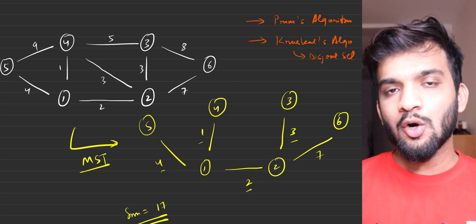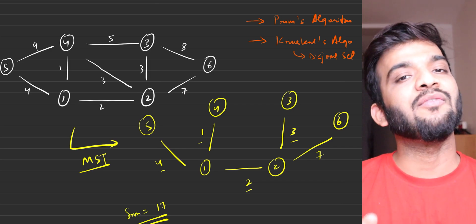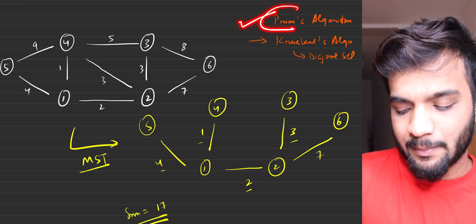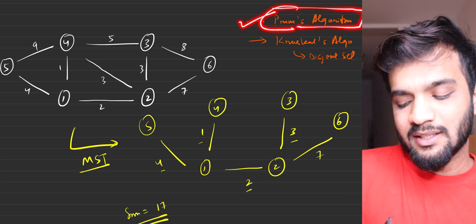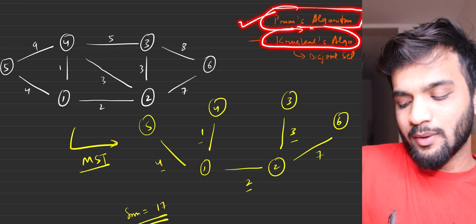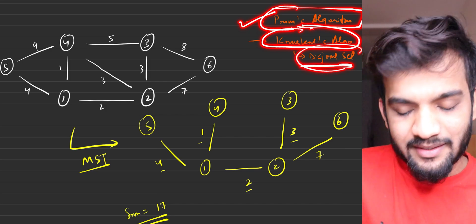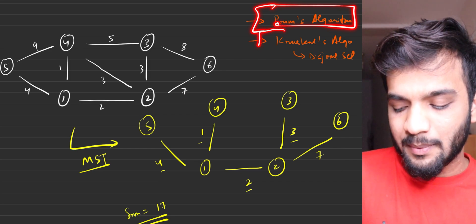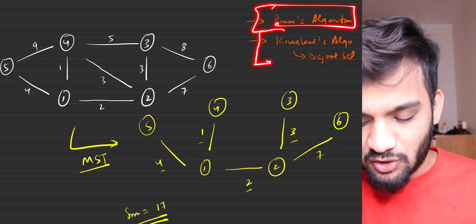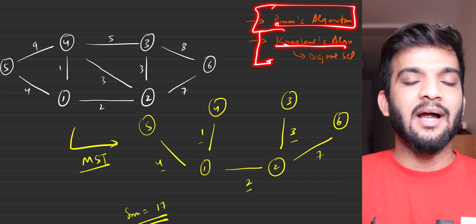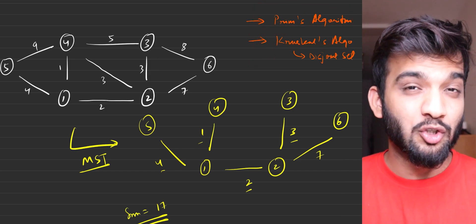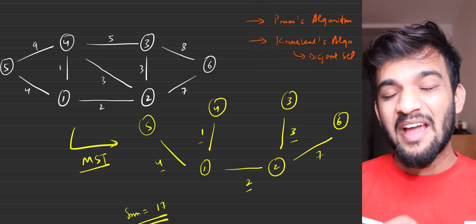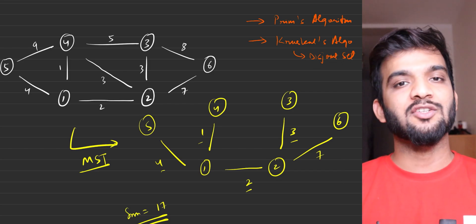Now you may wonder how to actually find the MST of a given graph. There are two key algorithms: Prim's algorithm, which will be covered in the next video, and Kruskal's algorithm, which requires understanding the disjoint set data structure. We'll learn Prim's first, then dive into disjoint set, Kruskal's algorithm, and related problems.